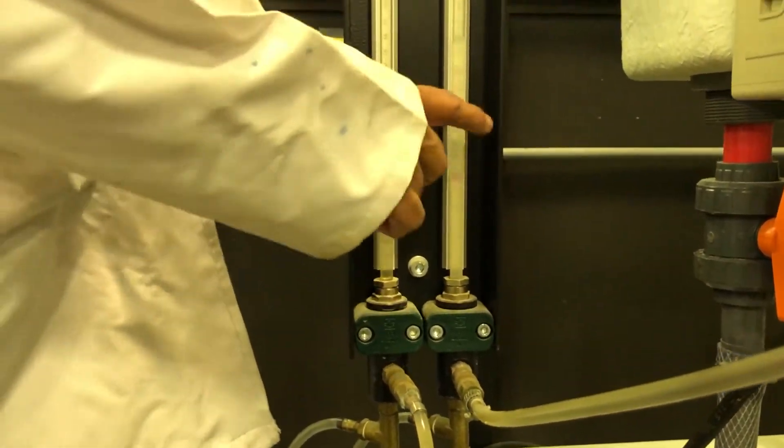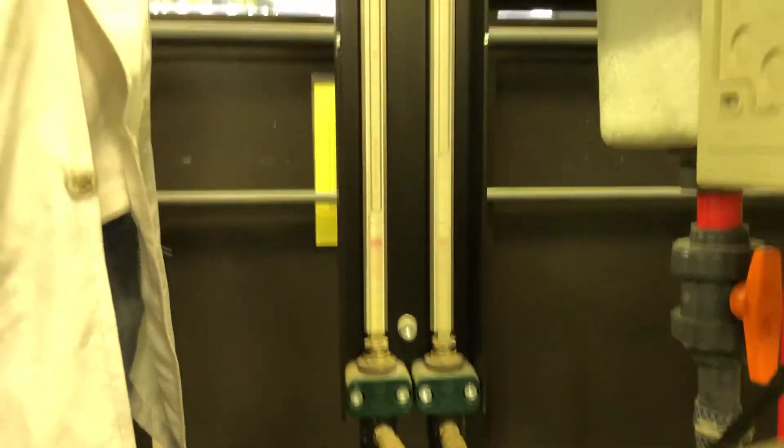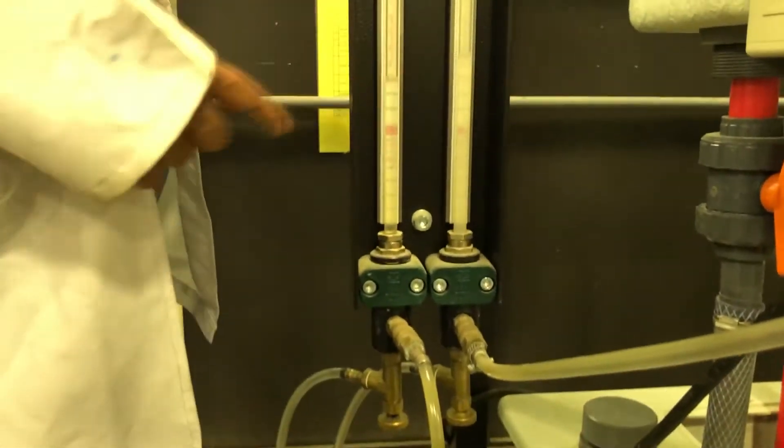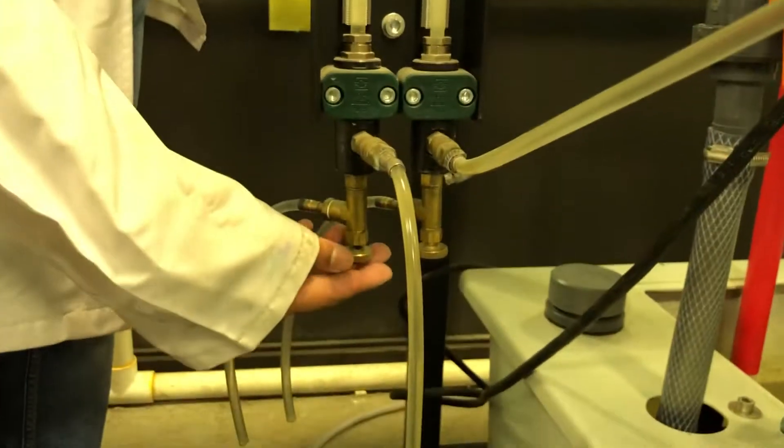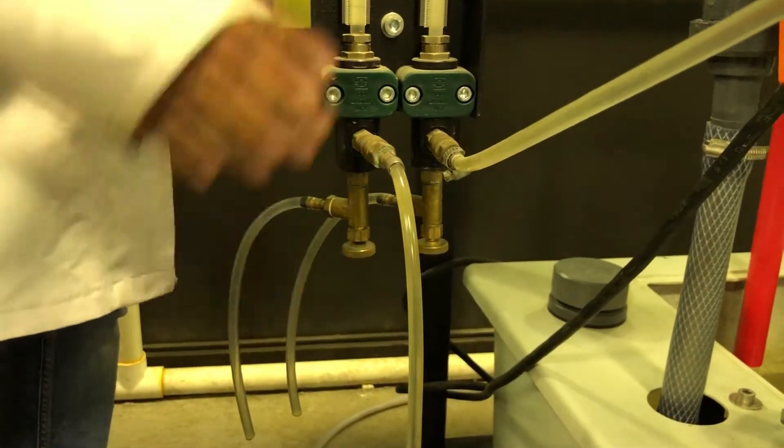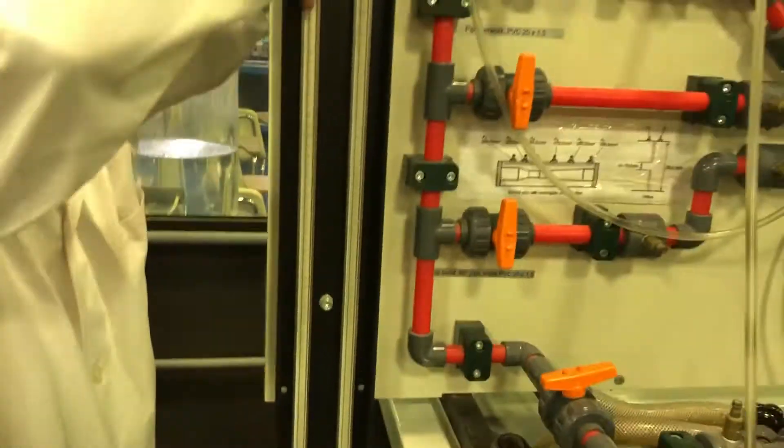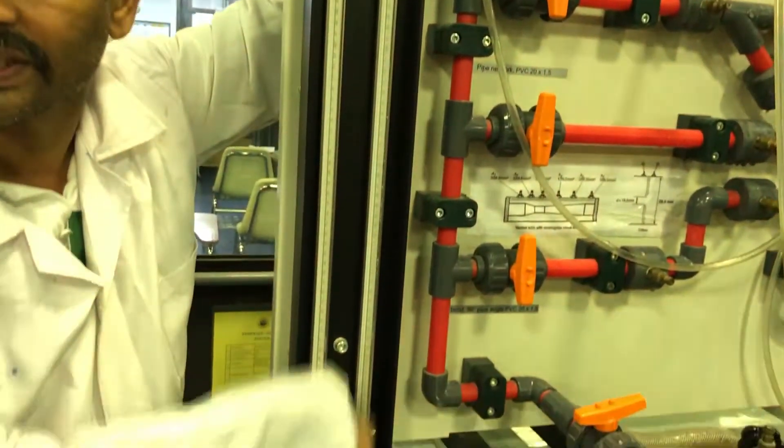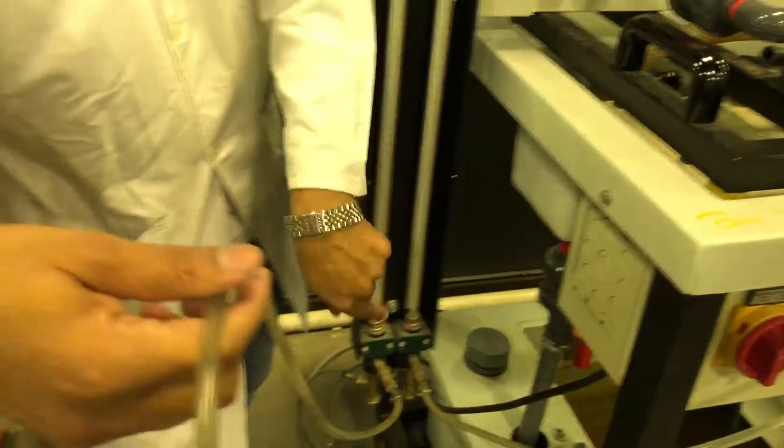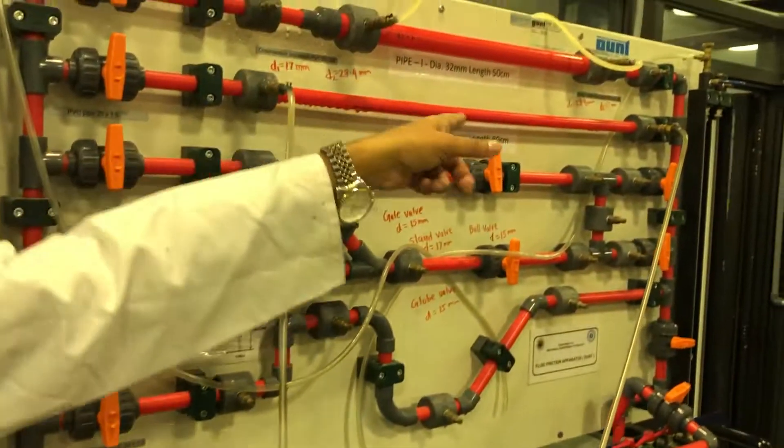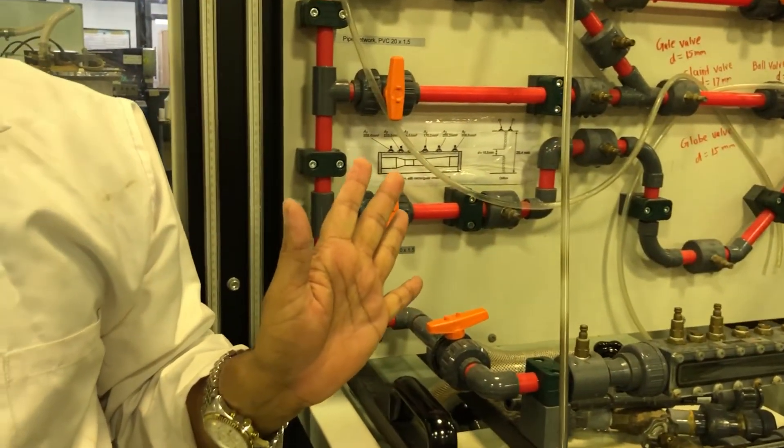Now you will find the level in the water should be the same. The water will stop and it will become the same. Now I will close this and close this. Why now same? Because this air column and this air column created equal pressure. Here the pressure is the same because the system is off.